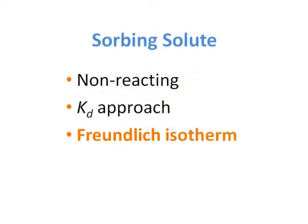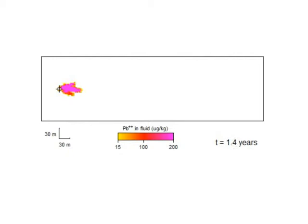Finally, lead sorption is described in the third case by a Freundlich isotherm. The plume is again retarded relative to groundwater flow, but we see a sharper latent edge since sorption is strongest at lower concentrations. The Freundlich isotherm gives rise to a tailing effect not observed in the KD model. Thanks for watching our animations on sorption.